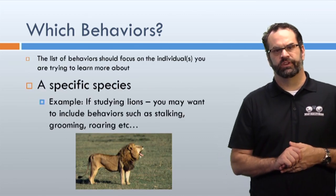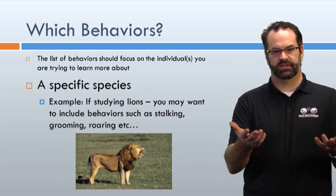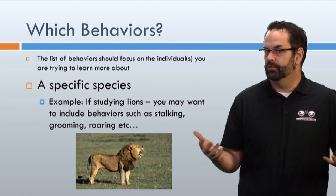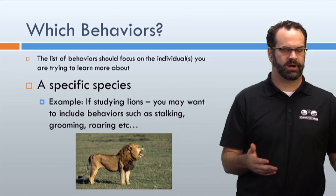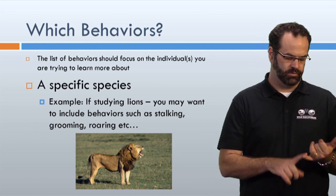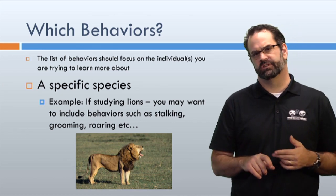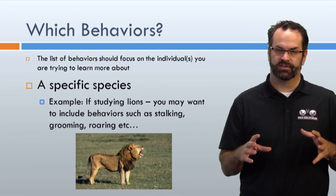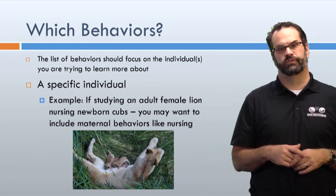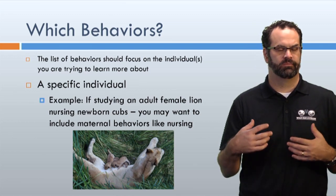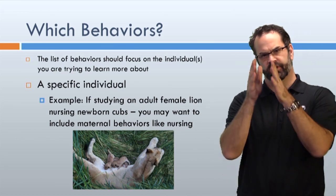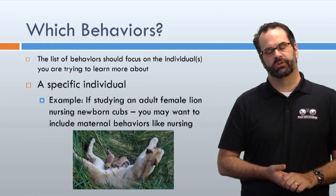It's also important to design a species-specific ethogram. If I'm studying lions, I'm not going to include 'forage' or 'browse' because they don't really do that. I'm more interested in roaring, hunting, group dynamics, and social behaviors. You design your ethogram to fit that species. And you can break it down further — if I was really interested in lioness mothering behavior, I could include grooming cubs, nursing cubs, and so on.